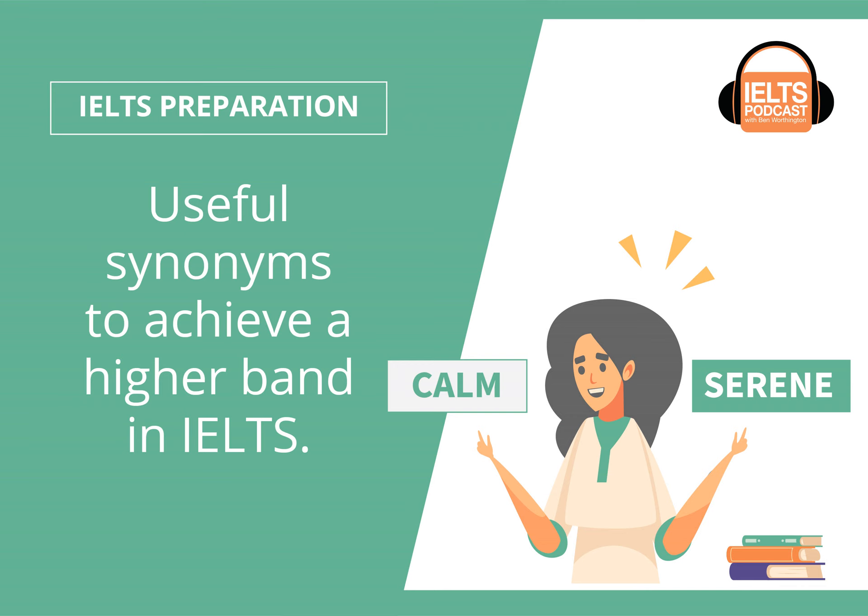In band 7, we hear about a sufficient range of vocabulary which allows some flexibility and some precision. One of the most telling words here is the word precise. This idea of precision — that the word you are using expresses exactly the meaning that you want it to express — is really very important when we're writing. So we're going to think about some of these key words: fluent, flexible, and precision.